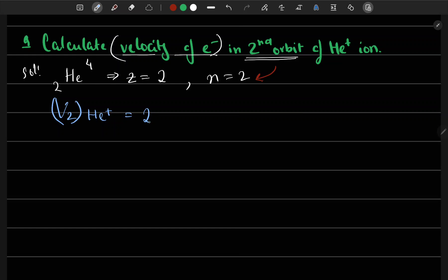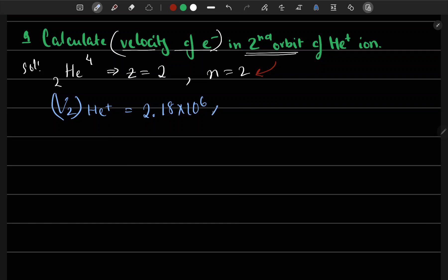Velocity formula is common for all, which is 2.18 times 10 to the power of 6, which is a common constant times Z by n.